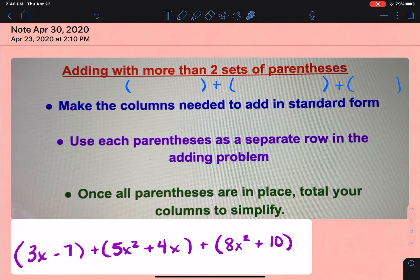Now the good news is some of this is the same. We're going to make the columns needed to add in standard form just like we've done before. We're going to use each parentheses as a separate row for the adding problem. So we'll put the first parentheses in the first row, the second parentheses in the second row, and the third parentheses in the third row. Once you have all the parentheses in place, you're going to total your columns to simplify, which is very much what we were doing before.